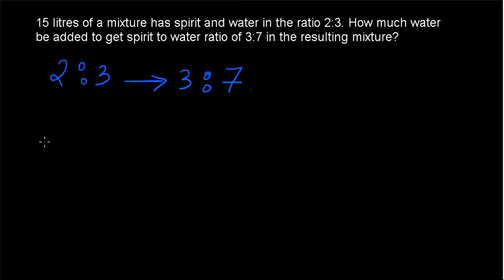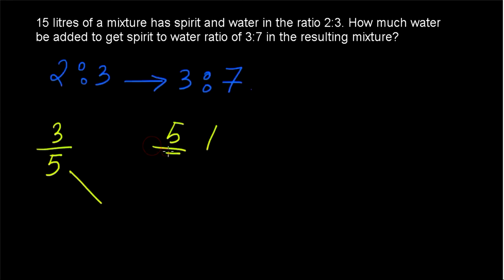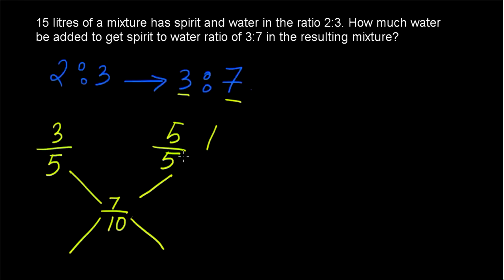Applying the rule of allegation: the quantity of water in the first mixture is 3 by 5, since the ratio is 2 is to 3. Water is being added, so we write it as 5 by 5. In the final mixture the quantity of water is 7 by 10, since the ratio is 3 is to 7. The difference between 5 by 5 and 7 by 10 is 3 by 10, and the difference between 7 by 10 and 3 by 5 is 1 by 10. So the required ratio is 3 is to 1.